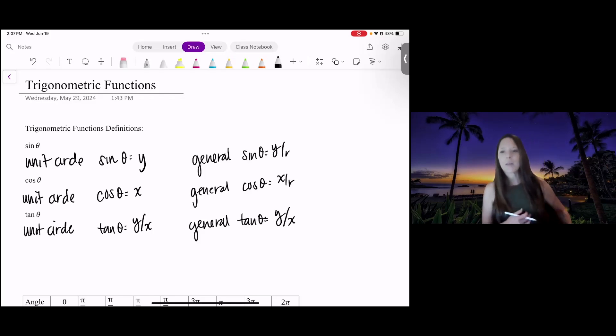Instead of x, I use theta because we're actually talking about the angle theta. For a unit circle, the sine of the angle theta is the y value, cosine is the x value, and tangent is y over x.